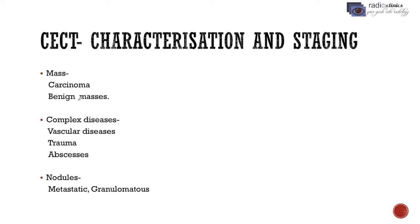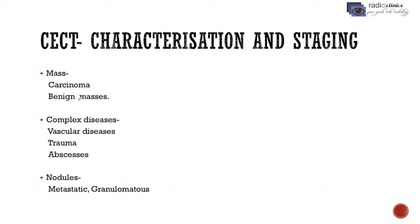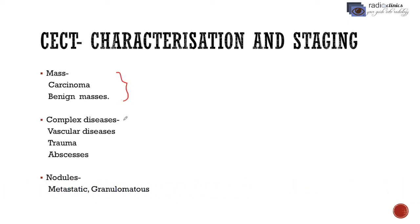This is done so that we can characterize the mass. In a non-contrast CT, many masses of the lung appear similar, so we may not be able to distinguish benign from malignant masses. Contrast CT is done to distinguish between benign and malignant masses.